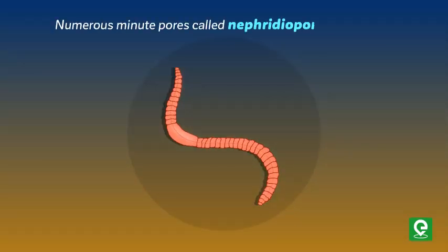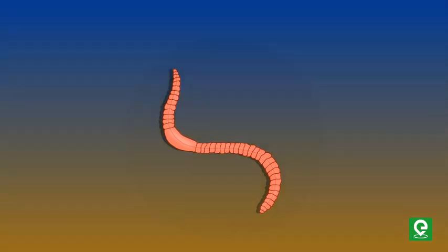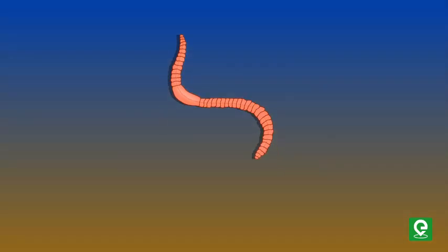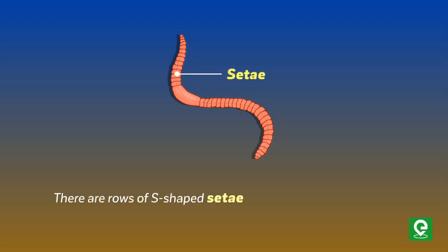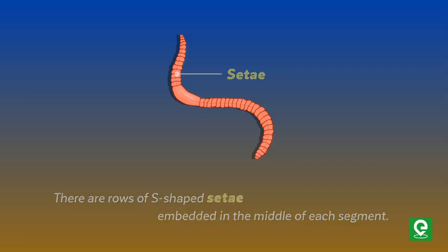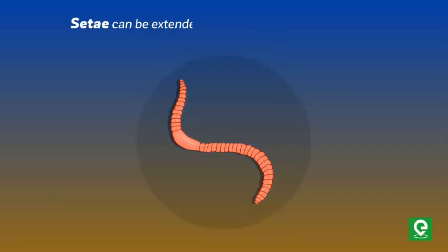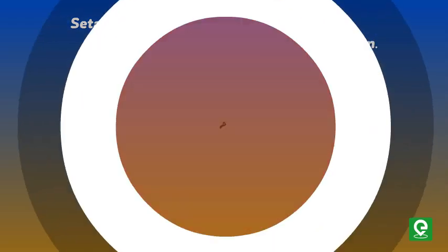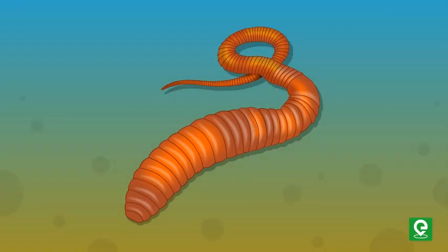Numerous minute pores called nephridiopores open on the surface of the body in each body segment except the first, last, and clitellum. There are rows of S-shaped setae embedded in the middle of each segment. Setae can be extended or retracted, and their principal role is in locomotion.